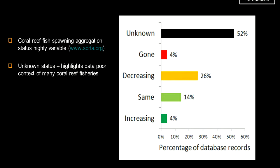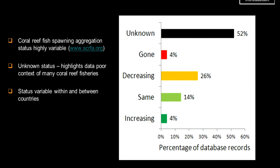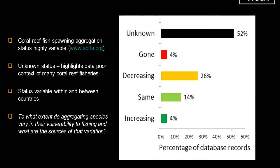The database shows that status is highly variable among spawning aggregations globally. The largest number assessed show a decreasing trend, some increasing, some the same. But what you notice is that huge black bar at the top, indicating that we don't know the status of many spawning aggregations globally. That highlights the data-poor context of many coral reef fisheries. The status is also highly variable within and between countries, which leads us to question the extent to which aggregating species vary in vulnerability to fishing and what are some sources of that variation.